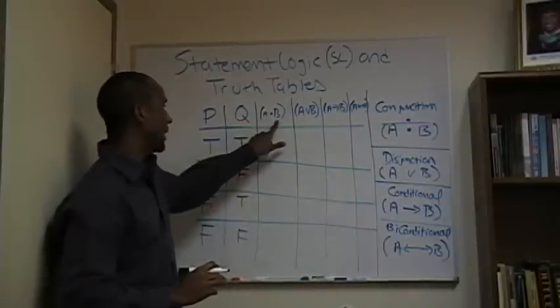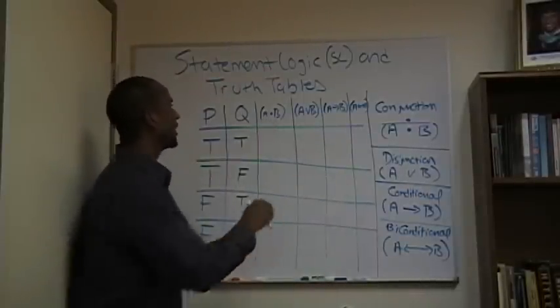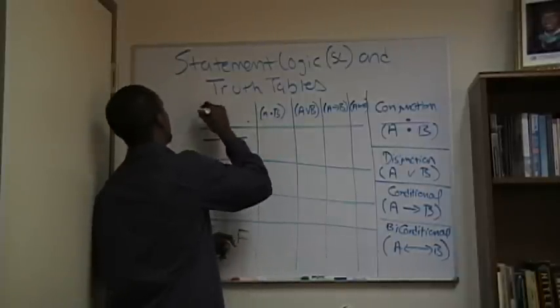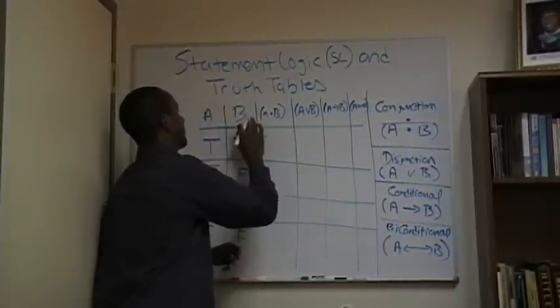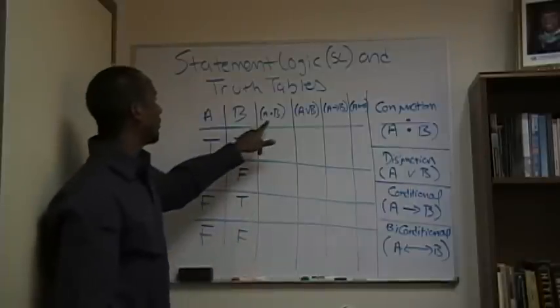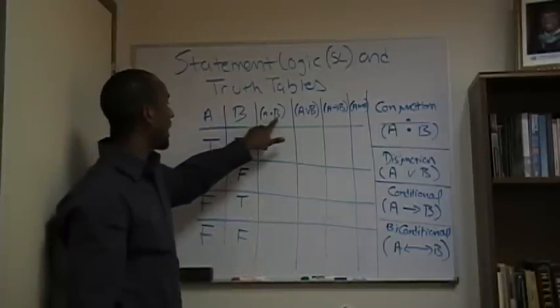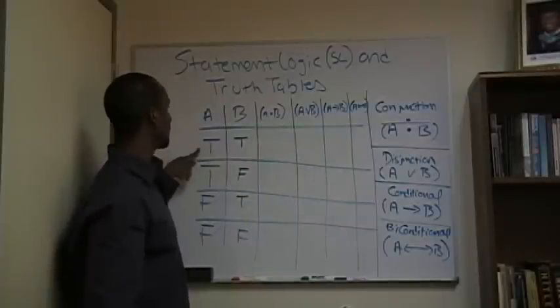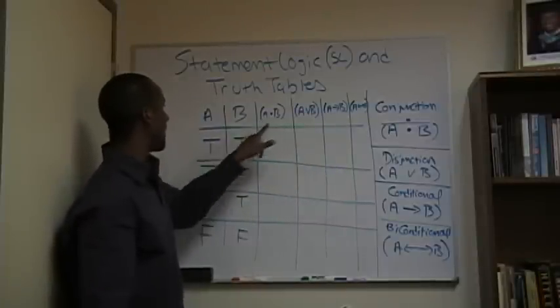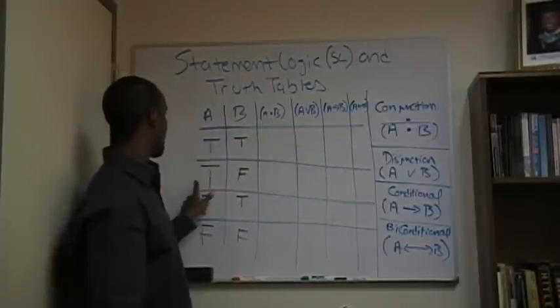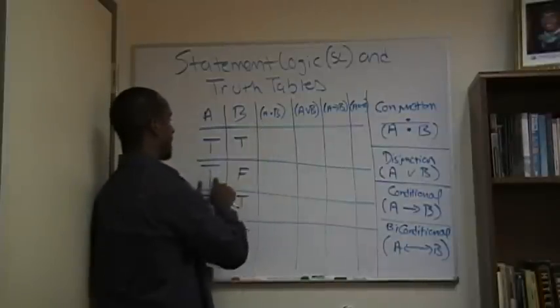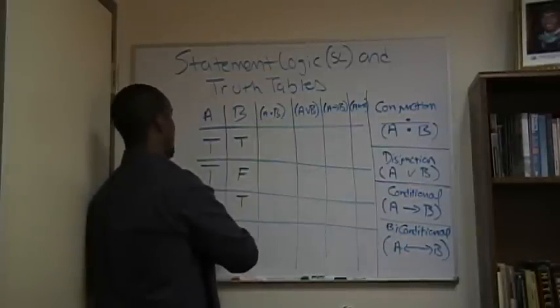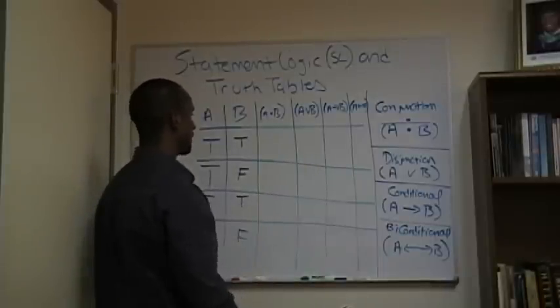Okay, for A and B - actually I can't use these variables, let's use the variables, sorry, A and B. If the variables we're using are A and B, every time I see an A on this line, I insert true. Every time I see a B, I insert true. For this line, every time I see an A, I insert true. However, every time I see a B, I insert false, and so on.